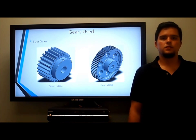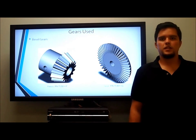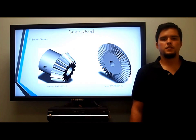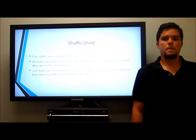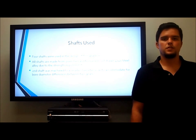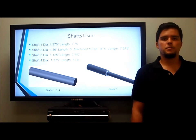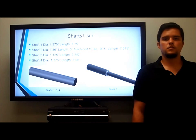Here are examples of the gears used based on the Boston catalog. The spur pinion consists of 24 teeth and the gear consists of 60 teeth. Here are the bevel gears selected from the same catalog — the pinion consists of 15 teeth and the gear consists of 45 teeth. Four shafts were used in the design of this gearbox. All shafts were made of quench and tempered cold drawn 4140 steel alloy due to the strength requirements. Shaft 2 was machined to a smaller diameter to accommodate bore diameter differences between two gears, and it is the only shaft machined in this way. The shafts have diameters ranging from 0.875 inches to 1.375 inches and various lengths.